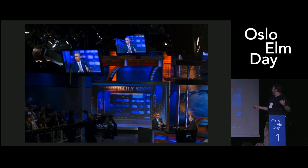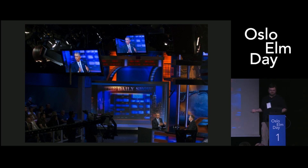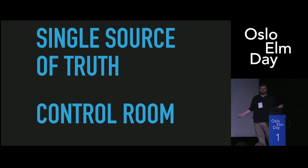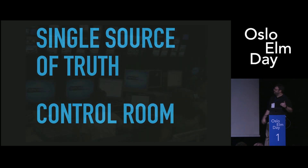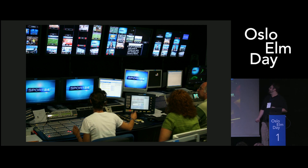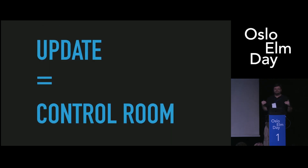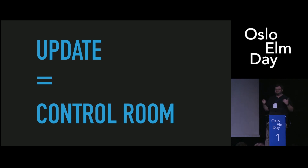In media, we don't have each station or each camera controlling its own state fully. We have a single source of truth, just like in Elm. And in the TV business, we call that a control room. When you're doing professional TV, you're actually controlling the camera's settings from the control room. You can have dozens of sources going out to dozens of different places, all controlled from one place, usually at the direction of a single person. If there's one thing I could have you take away from this talk, it's that you should be thinking of your update function like a control room — a single source of truth, a single source of control.